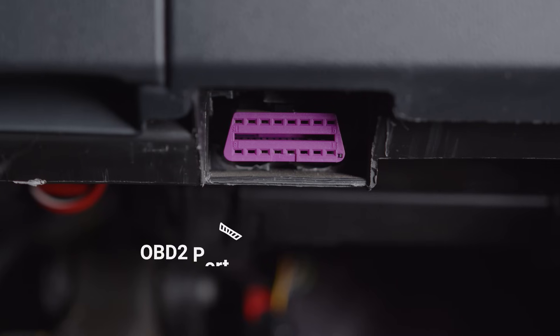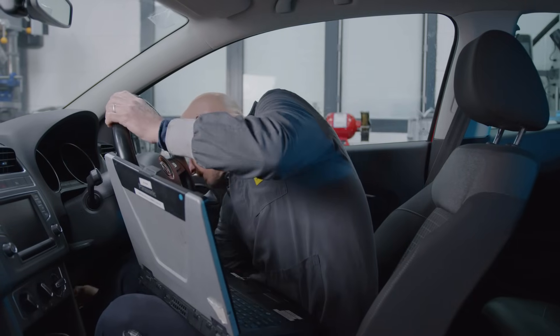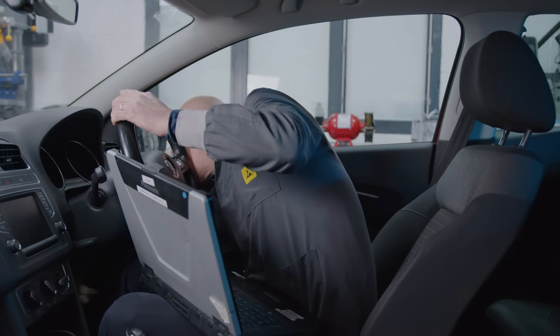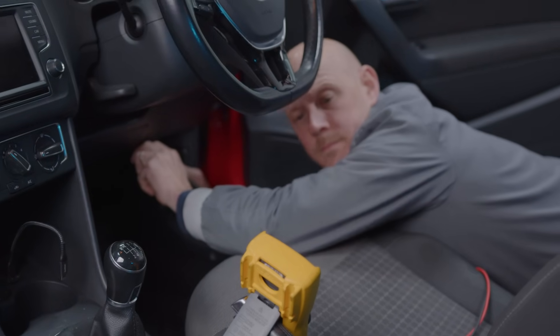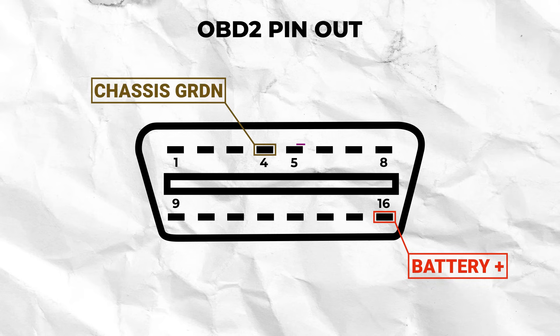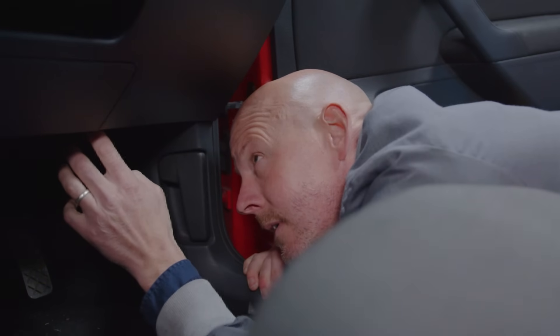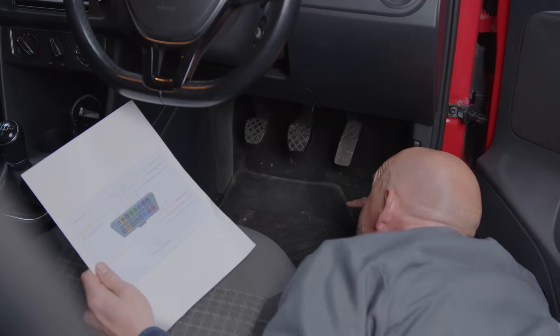Let's quickly look at the OBD2 port, also known as the Datalink connector or DLC. This port serves as a universal access point for diagnosing and reading the vehicle's computer systems and it's an easy access point to diagnose CAN bus network faults from. A number of the pins are the same across all vehicle manufacturers, with pins 16, 4 and 5 always being battery positive, chassis ground and signal ground. Vehicles with CAN bus networks usually have pins 6 and 14 for CAN high and CAN low.